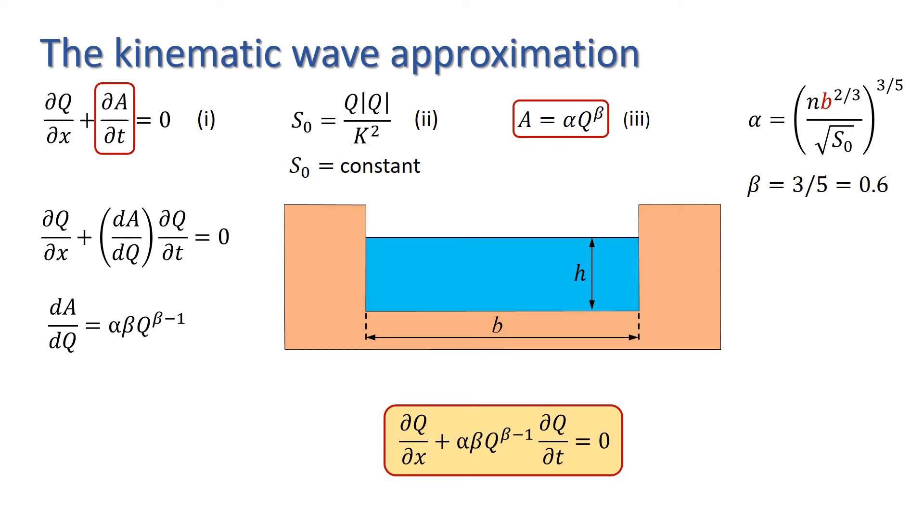Now, rather than having to solve two equations simultaneously, we have a single equation for the dependent variable Q containing derivatives of Q with respect to both of the independent variables x and t. We can now set up a finite difference scheme to solve this equation numerically.